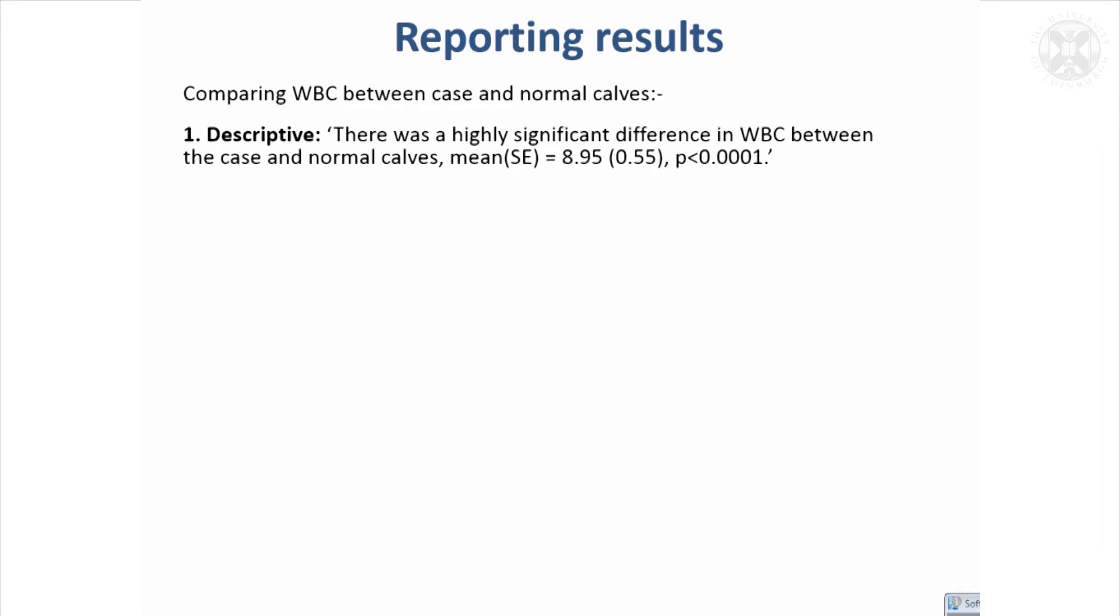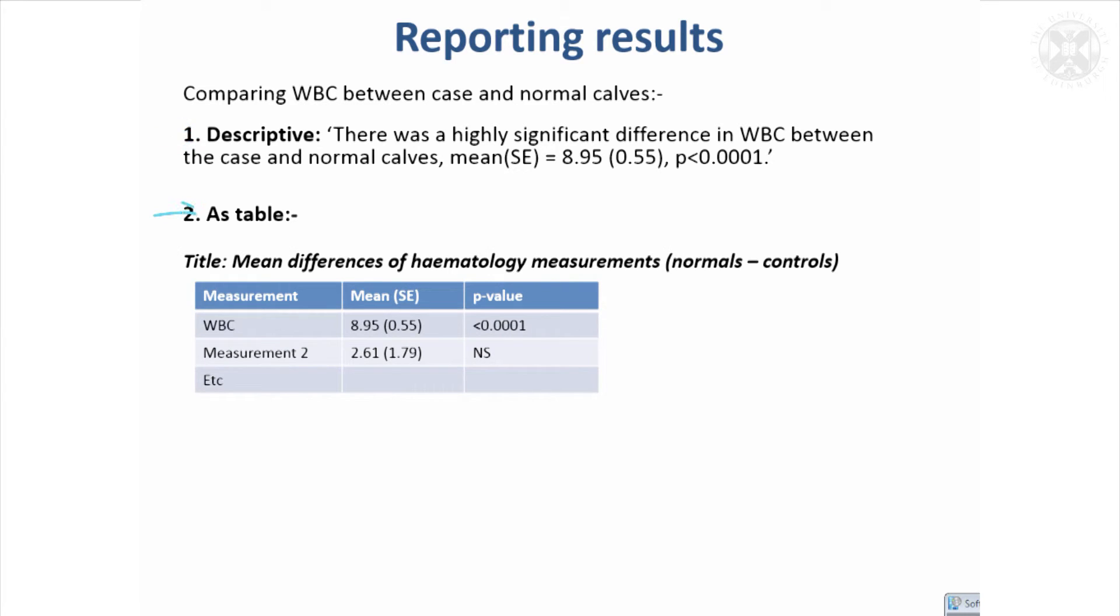A few notes on reporting results. You can either do it descriptively or in table form. You might give a mean difference along with its standard error and the p-value in abbreviated form, or you could give a confidence interval. Sometimes people find that easier to think about than a standard error.